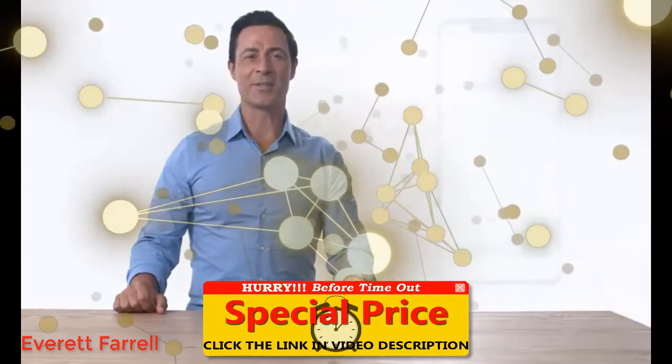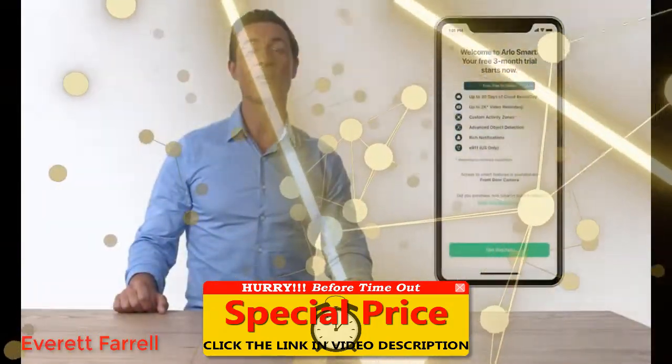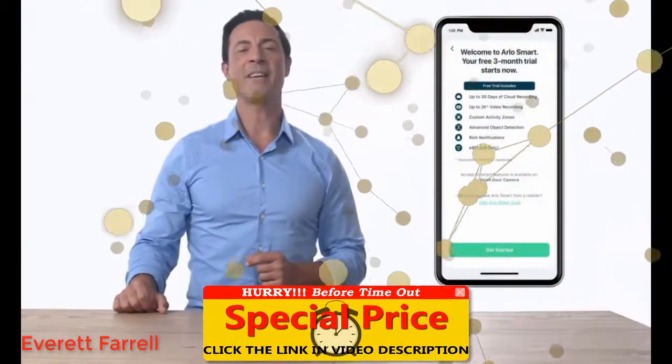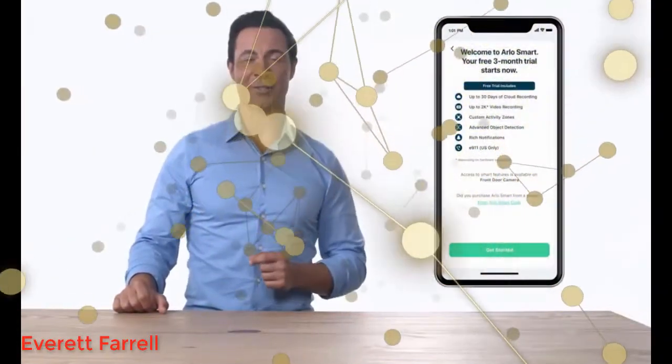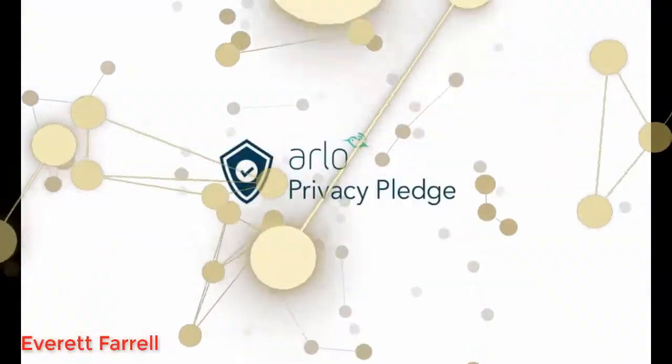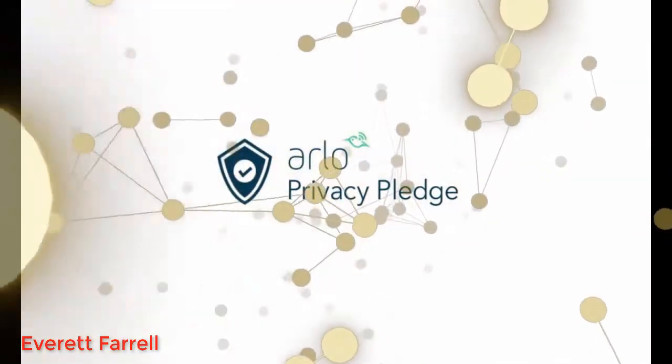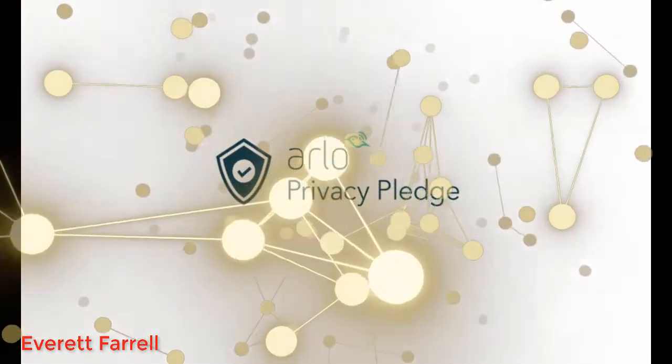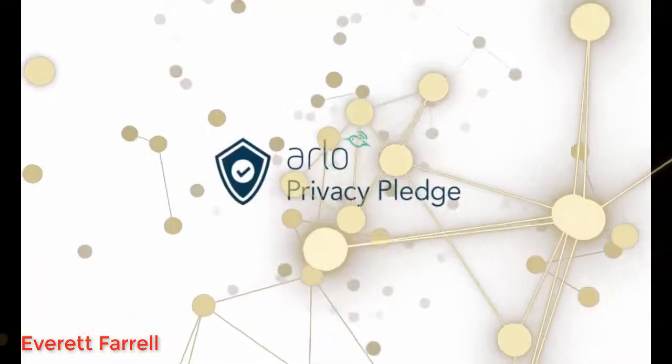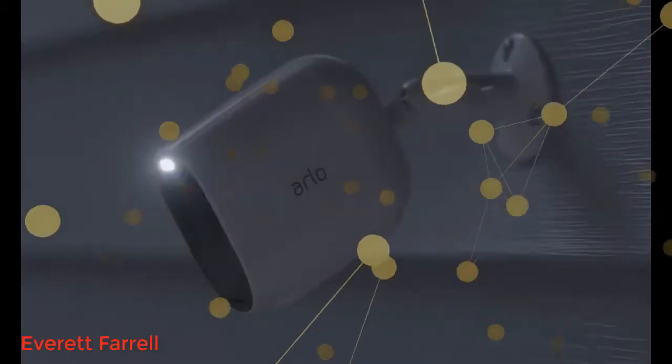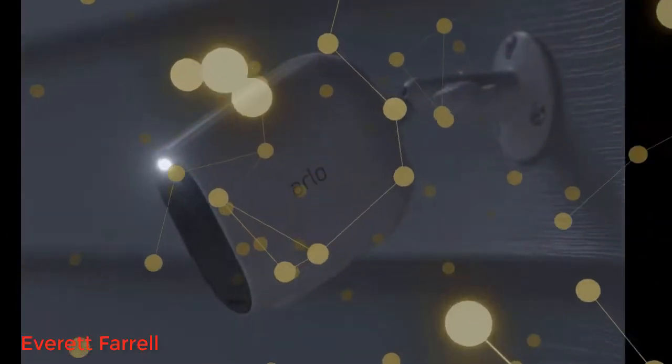Arlo Smart is a subscription-based service you can add to your Arlo cameras that provides cloud recording with 30-day video history, package detection, cloud activity zones, and more. The Arlo privacy pledge ensures your personal data and videos remain secure, private, and in your control. Congratulations, your setup is now all complete. We hope you enjoy your new Arlo Essential camera.